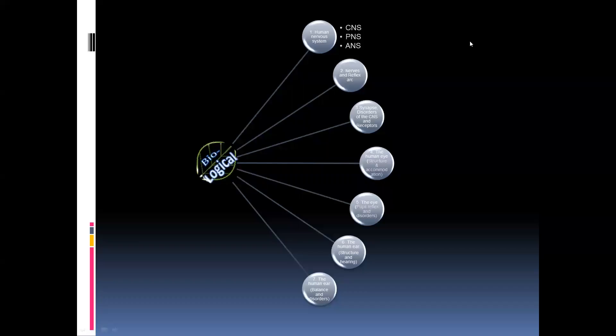In this third lesson we look at synapses and their significance, two disorders of the central nervous system, and the role of receptors.